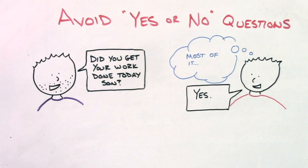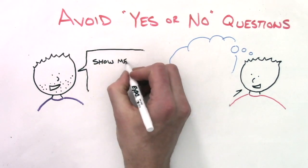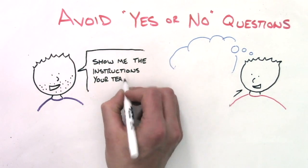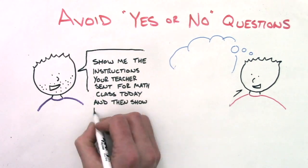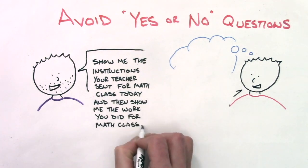Consider instead taking about 15 minutes and asking about work in a different way, such as, show me the instructions your teacher sent for math class today. And then, show me the work you did for class today.